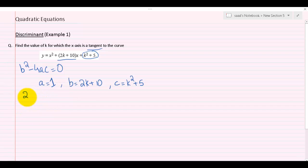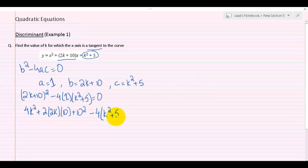b squared means (2k plus 10) squared minus 4 times a which is 1, times c which is k squared plus 5, equals 0. Let's open this bracket: (2k plus 10) squared means we will get 4k squared plus 2 times 2k times 10 plus 10 squared. 4 times 1 will give us 4, so I'll write the other bracket as it is. We will solve it in the next step.